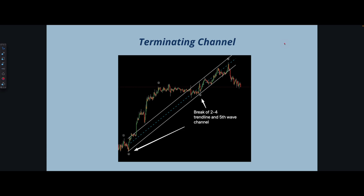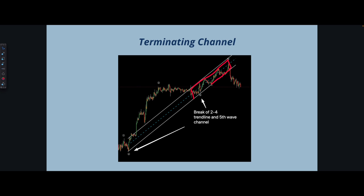The terminating channel is drawn from your wave 2 with a straight line all the way to your wave 4. A break of this 2-4 trendline is confirmation that your fifth wave is done. Most of the time, by pulling this trendline over you can contain your fifth wave in a channel — break of it, and this whole 5-wave move is over.